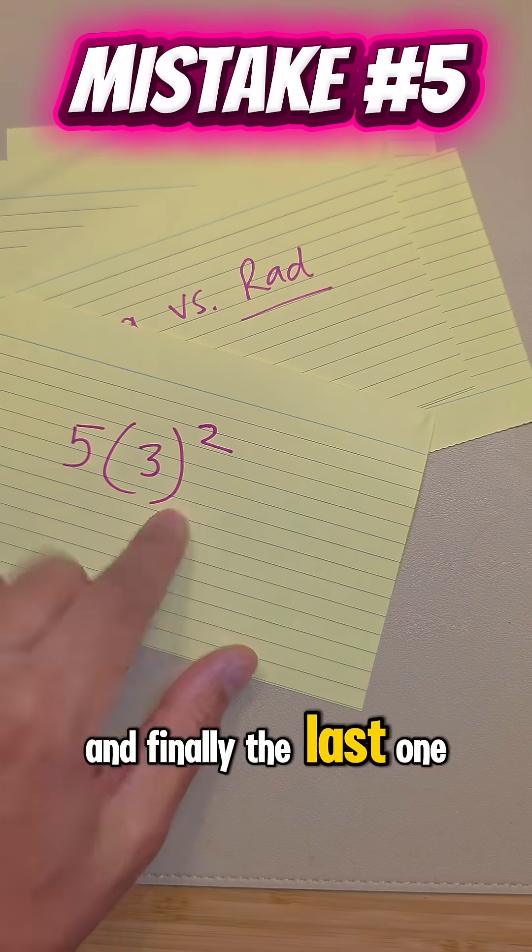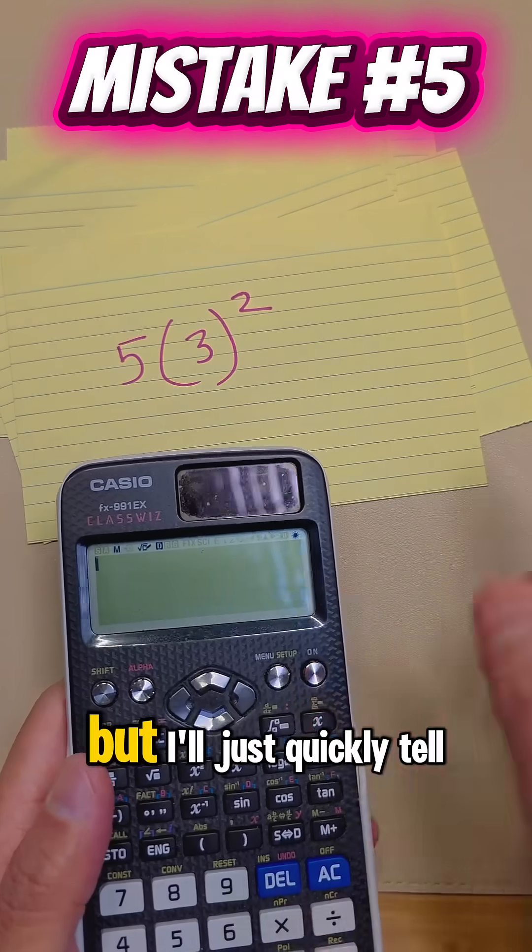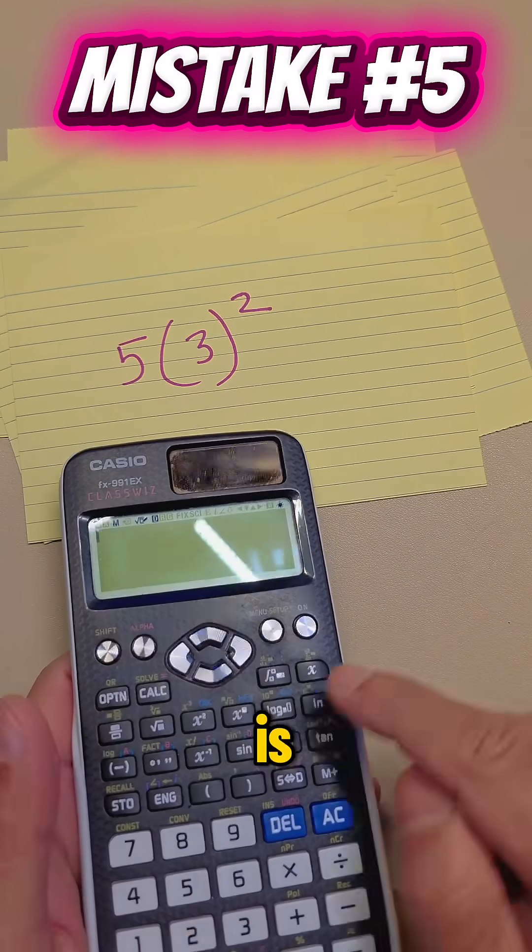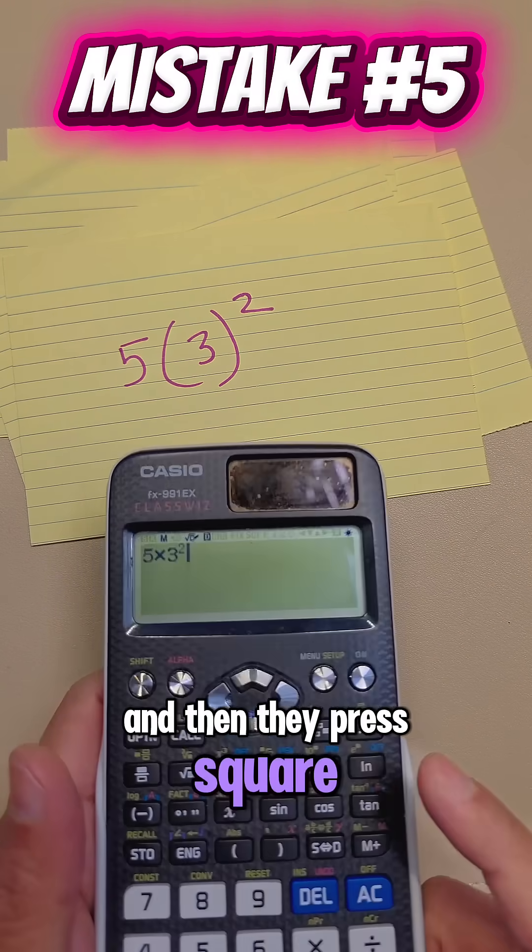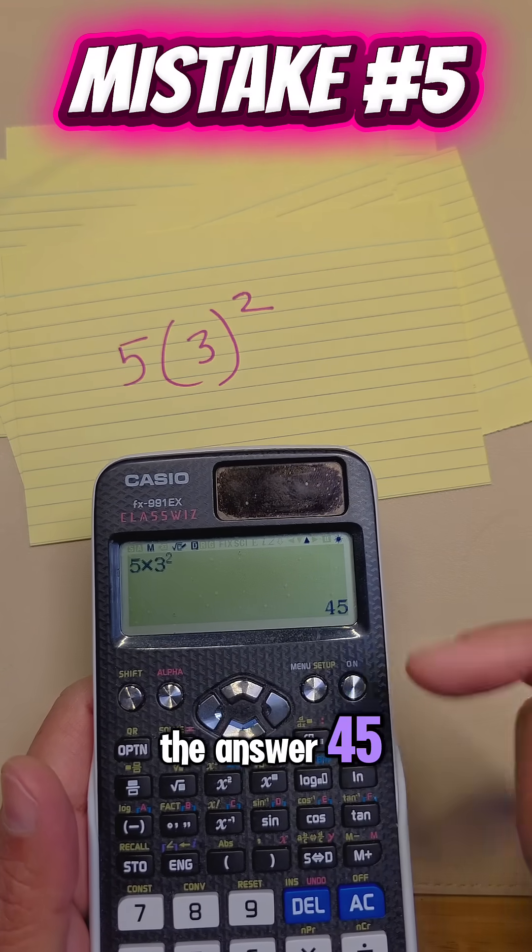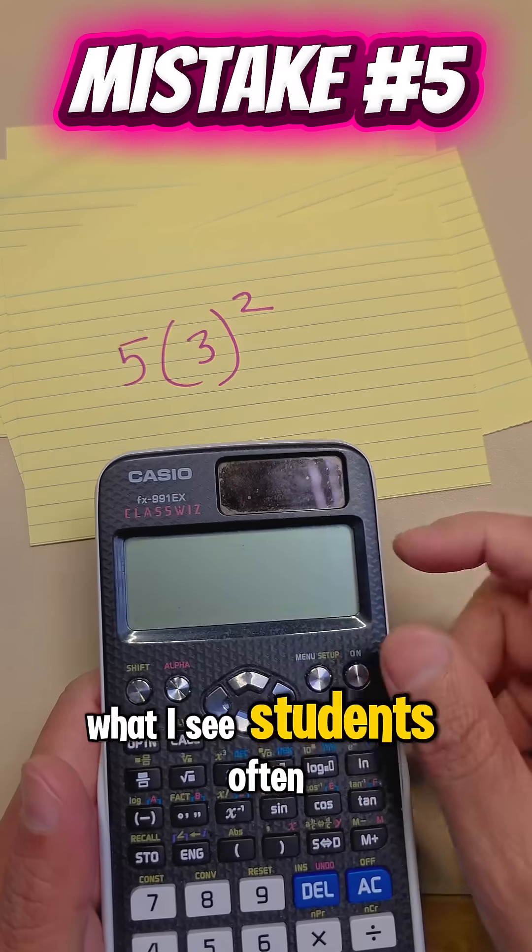And finally, the last one. Now this can also appear on a non-calculator paper as well. But I'll just quickly tell you what the common mistake is. Students do 5 times 3 and then they press square. As you can see, it gave the answer 45, which is actually correct because this calculator did manage to work this correctly.